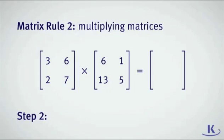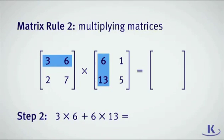Step 2: To multiply the matrices, start off by looking at the first row of the first matrix and the first column of the second matrix. Start by multiplying the 3 and the 6. Then, multiply the 6 and the 13. Add these two numbers. 18 plus 78 is 96. Put 96 in the upper left corner of the answer matrix.